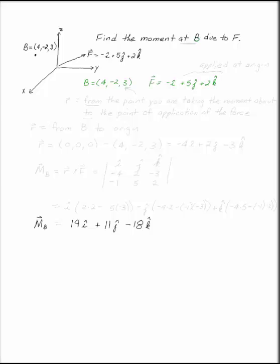Once you know that, what you need to find is R. R is the vector from the point you're taking the moment about to the point of application of the force. That's very important. You want to go from the point you're interested in—in this case, the point we're interested in is B, that's where we want to find the moment at—to the point of application of the force.